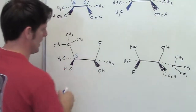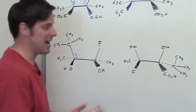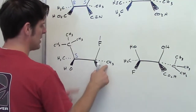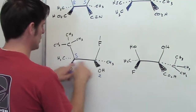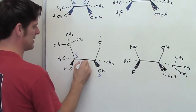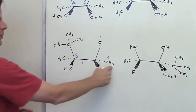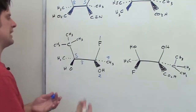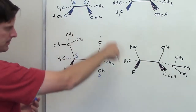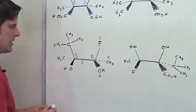Now we look at this stereocenter. It's bound to a fluorine, oxygen, carbon, carbon. Fluorine has the highest atomic number — priority group number one. Oxygen is second place. Carbon bound to hydrogen versus carbon bound to oxygen: the oxygen branch is group number three, and the hydrogen branch is group number four. Group number four is pointing three-dimensionally away from us. Tracing from one to two to three is clockwise, which means it has an R configuration.